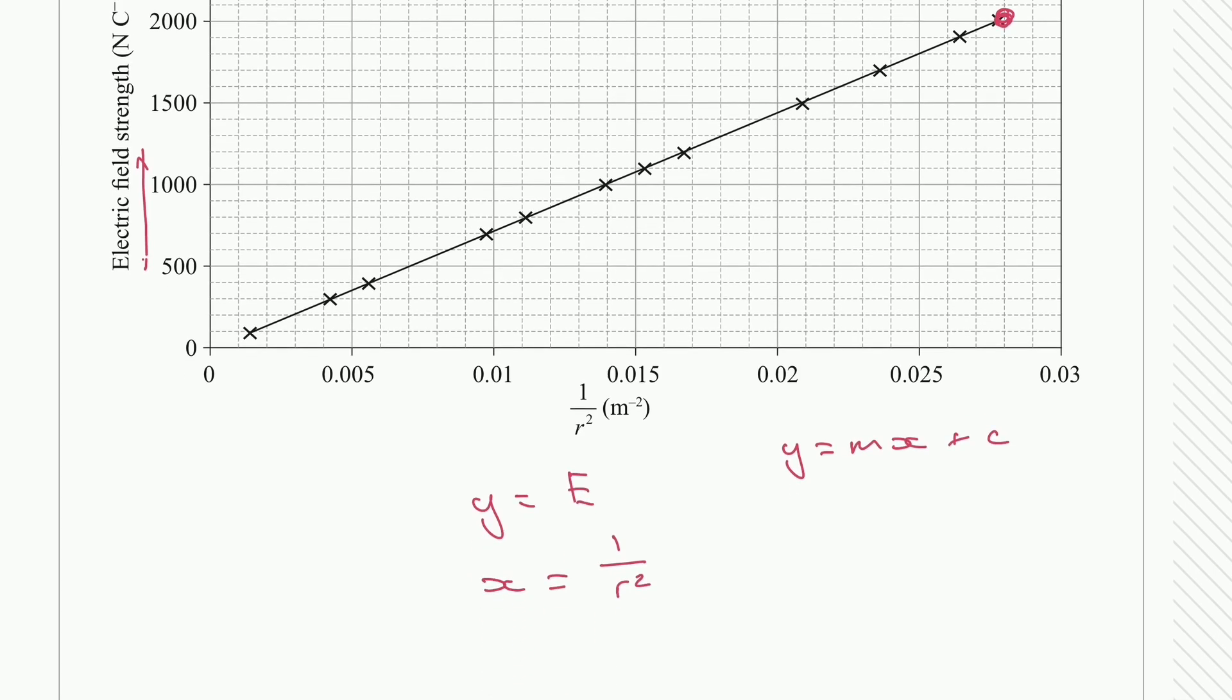Now we can solve for the gradient or we can solve for c first. I'm going to solve for c first by just saying c is equal to 0. So the further and further away you get from the source, that value on our x-axis is actually going to get really close to 0. And also at that point that electric field strength is going to get really close to 0. So I'm going to make an assumption that c is equal to 0 in this instance.